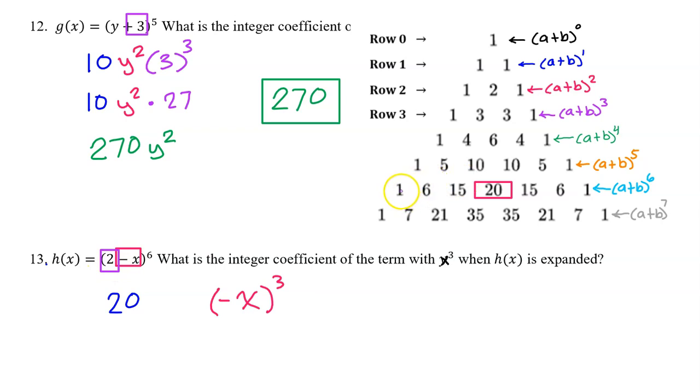Starting from the left, the 2 would be 2^6 right here. But in the next term, it would be 2^5, and then 2^4, and then 2^3.